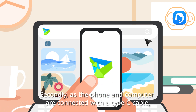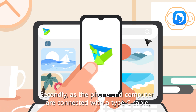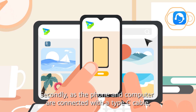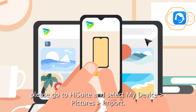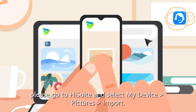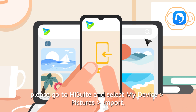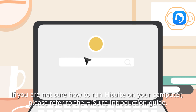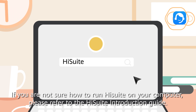Secondly, as the phone and computer are connected with a Type-C cable, please go to HiSuite and select My Device, then Pictures, then Import. If you are not sure how to run HiSuite on your computer, please refer to the HiSuite Introduction Guide.